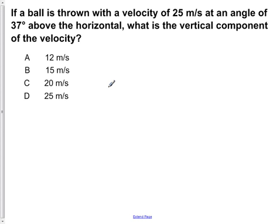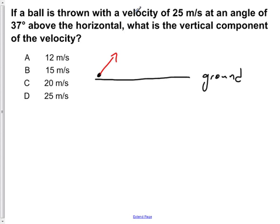If a ball is thrown with a velocity of 25 meters per second at an angle of 37 degrees above the horizontal, what is the vertical component of the velocity? So here we have ground level. And if we throw a ball up at an angle of 37 degrees, what is the vertical component of this?